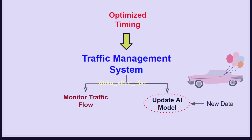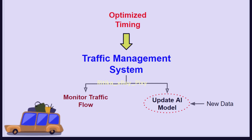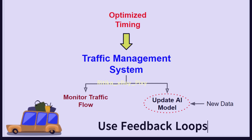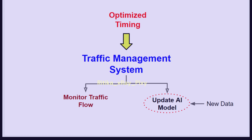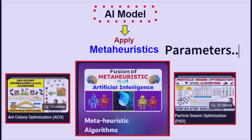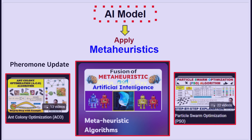We can use feedback loops so the AI model can be guided by optimization results for continuous improvement of the smart traffic management system. In metaheuristic algorithms, we also need to adjust the parameters. Based on AI results, we can automatically modify the metaheuristic parameters — either manually or automatically. For example, in ant colony optimization (ACO), we have a parameter called the pheromone evaporation rate that needs to be updated for each path. We can update this parameter automatically based on AI results.